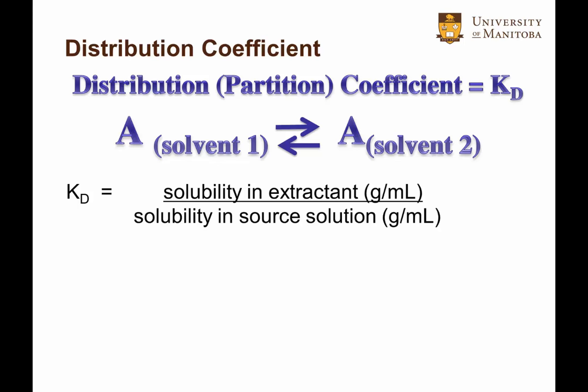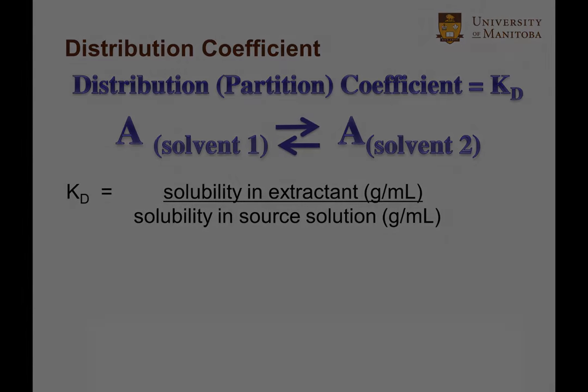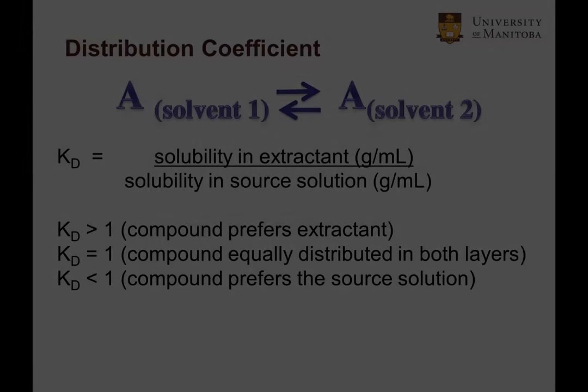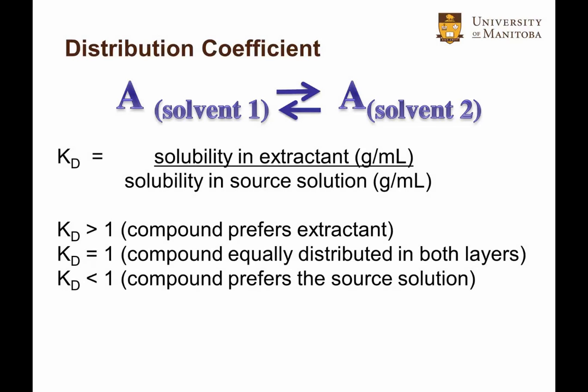This example with A, solvent 2 is the extractant and solvent 1 is the source solution. When Kd is less than 1, most of the compound is in the source solution. When Kd is equal to 1, then there's equal distribution. And finally, when Kd is larger than 1, then the compound prefers the extractant layer, which is the solvent that's being added to extract the compound.